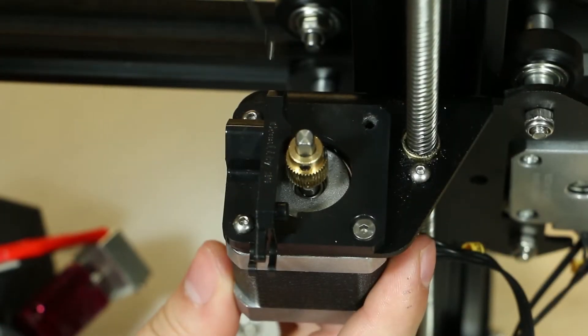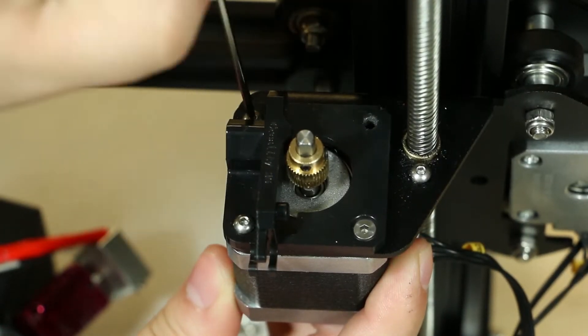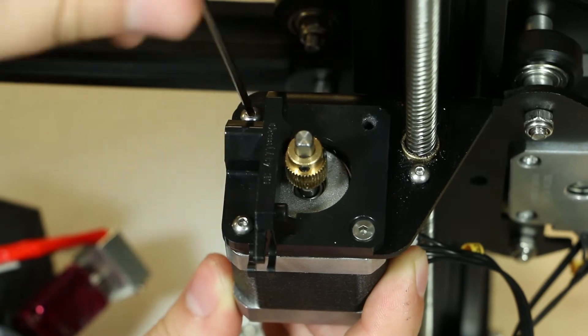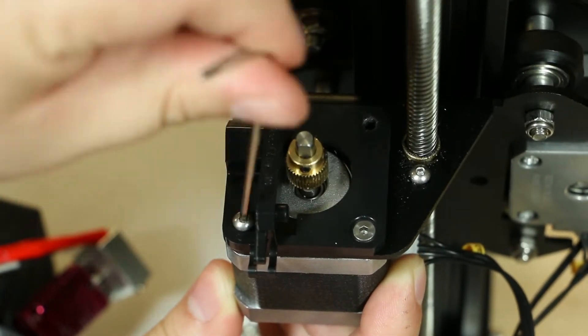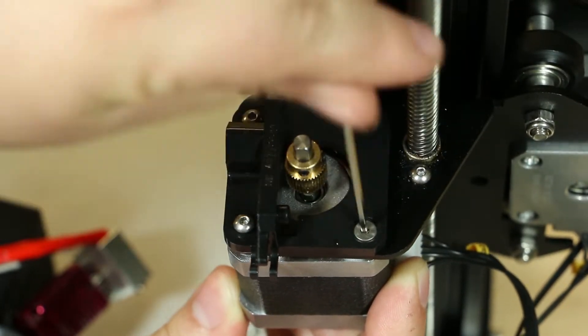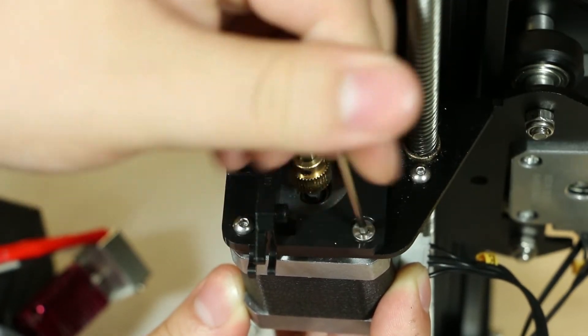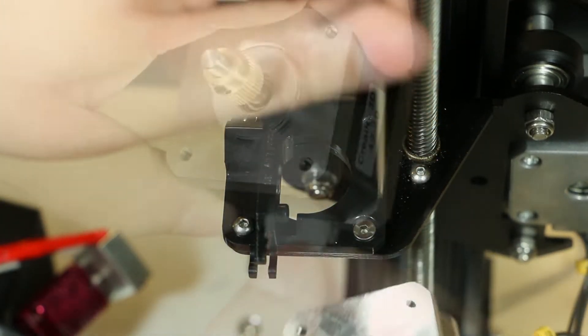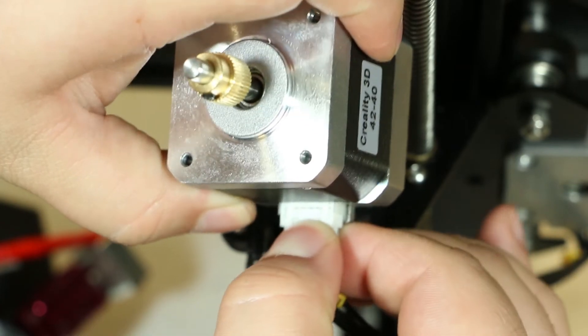Next, you will use the 1.5 millimeter allen wrench to unscrew the last three screws. Make sure to hold the stepper motor so it doesn't fall. If you have not already disconnected your stepper motor, now is a good time to do so. You can also do it earlier in the process.